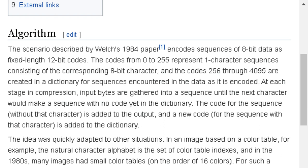Algorithm: The scenario described by Welch's 1984 paper encodes sequences of 8-bit data as fixed-length 12-bit codes. The codes from 0 to 255 represent one-character sequences, and codes 256 through 4095 are created in a dictionary for sequences encountered in the data as it is encoded. The code for the sequence without that character is added to the output, and a new code for the sequence with that character is added to the dictionary.